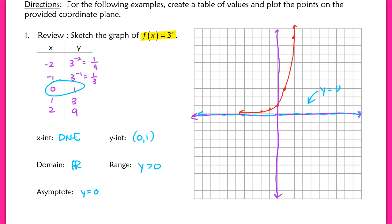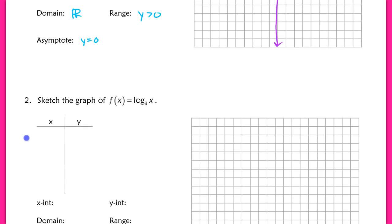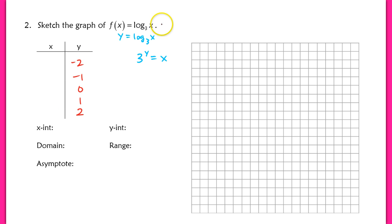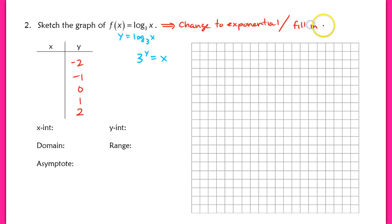Now when we switch over to a log function, in this second example it says sketch the graph of y equals log base 3 of x. What you would normally be asking yourself for table values is: 3 to the y power equals x. So actually when we create our table here, we want to fill out the y column instead. It's easier to fill out the y in a log. For a log function, change it to an exponential, and then fill in the y values.